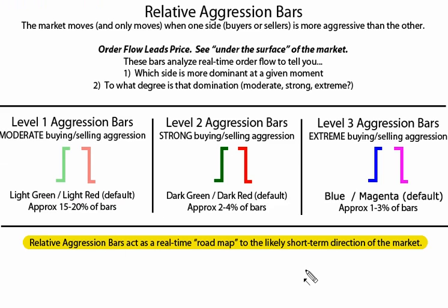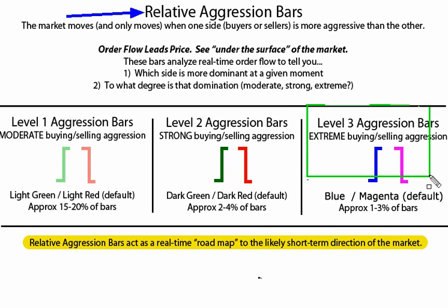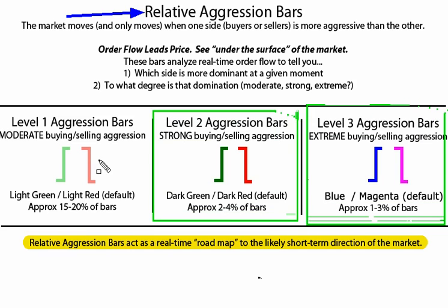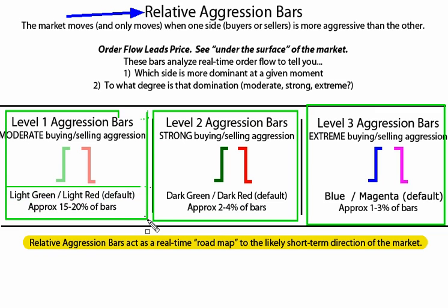As a refresher, when we talk about extreme buying or selling, we're looking at these relative aggression bars. What these aggression bars are telling us is looking at the order flow — looking under the surface at the aggression — so that in real time, on whatever time frame you're using, we can tell which side, either the buyers or the sellers, is more aggressive. It's aggression that moves the market. By looking at this order flow, we're able to see, number one, are buyers or sellers more aggressive at a given moment, and number two, to what degree they're more aggressive.